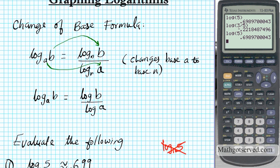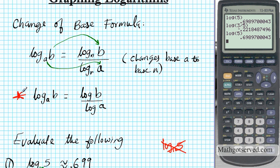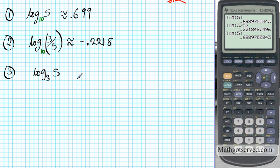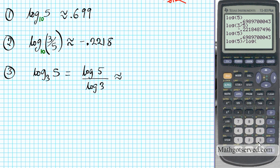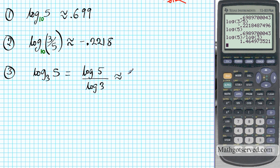Applying the change of base formula, log base 3 of 5 becomes log of 5 divided by log of 3 — the argument goes on top and the base goes in the denominator, both as common logs. We enter log(5) divided by log(3) into the calculator, and the correct answer is 1.4650 to 4 decimal places. That's how you enter a log of any base into the calculator.